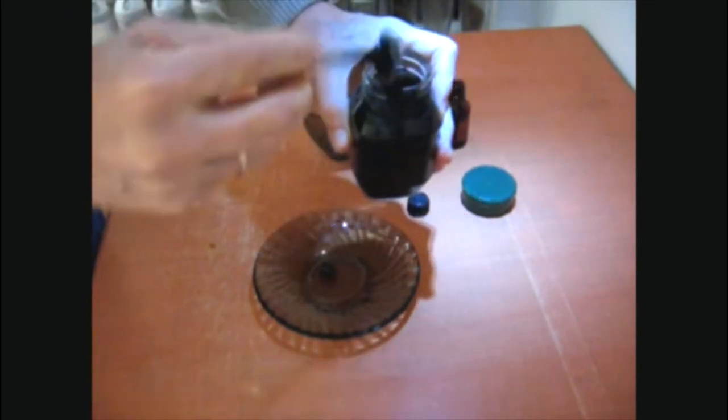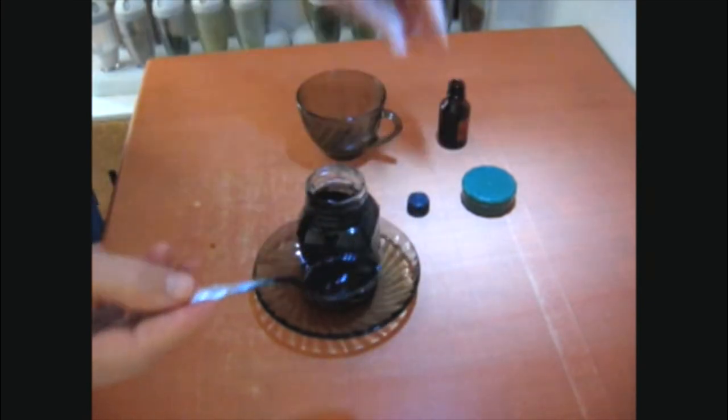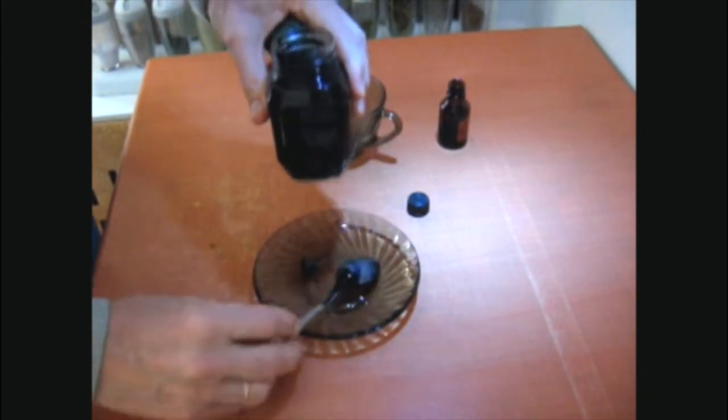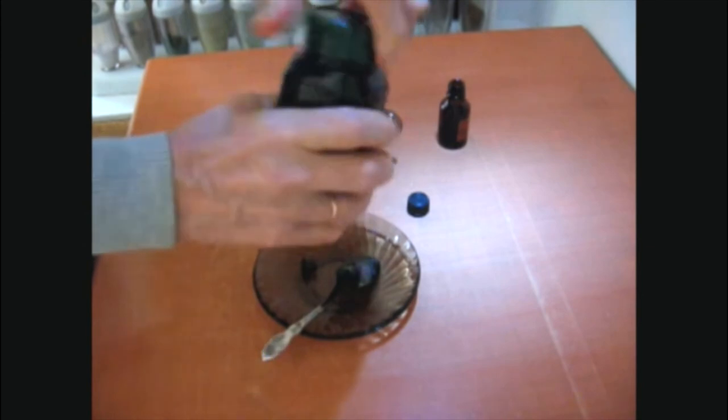Blue iodine solution is ready. We close the lid. Stored in an ordinary room at normal room temperature, but tightly closed. If not tightly closed, it will quickly become liquid.